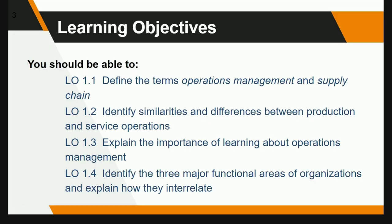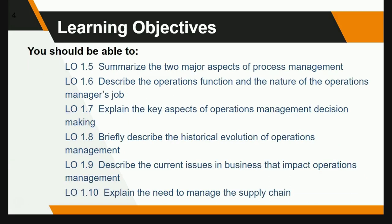Learning objectives: You should be able to define the terms operation management and supply chain. Identify similarities and differences between production and service operations. Explain the importance of learning about operations management. Identify the three major function areas of operations and explain how they interact. Summarize the two major aspects of process management. Describe the operations function and the nature of operations management's job. Explain the key aspects of operation management's decisions. Briefly describe the historical evolution of operation management. Describe the current issues in business that impact operations management. Explain the need to manage the supply chain.